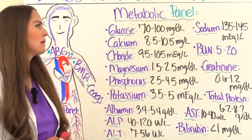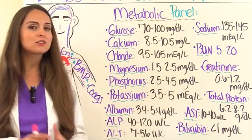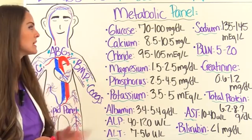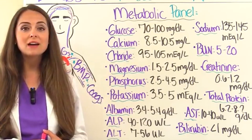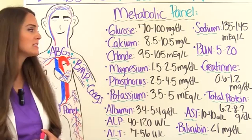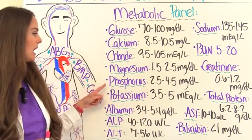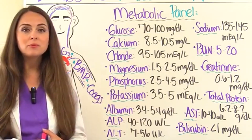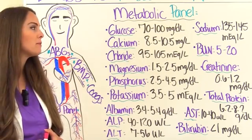Now let's look at the metabolic panel. This tells us about fluid and electrolytes including glucose, renal function, and if it's comprehensive, liver function as well. Normal glucose is 70 to 100 mg/dL. Calcium is 8.5 to 10.5 mg/L. Chloride is 95 to 105 mEq/L. Magnesium is 1.5 to 2.5 mg/dL. Phosphorus is 2.5 to 4.5 mg/dL. Potassium is 3.5 to 5 mEq/L. Sodium is 135 to 145 mEq/L.